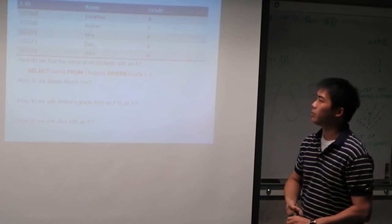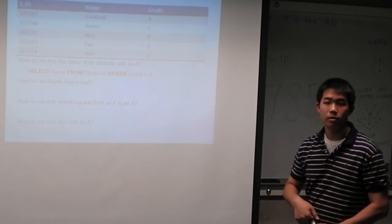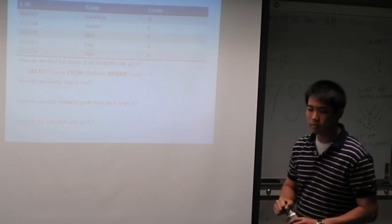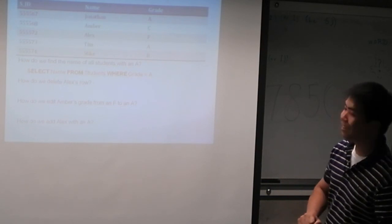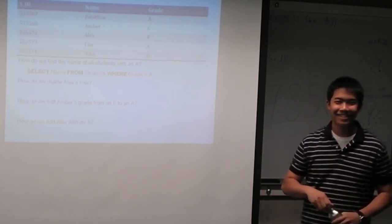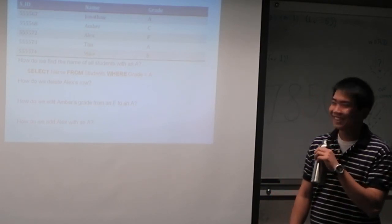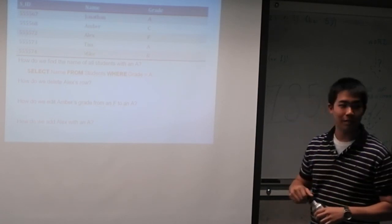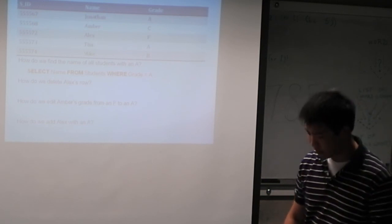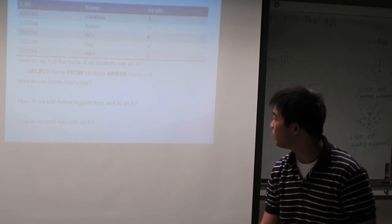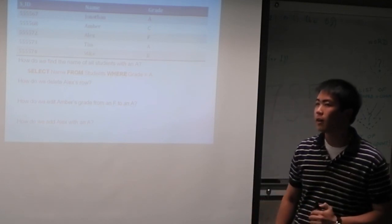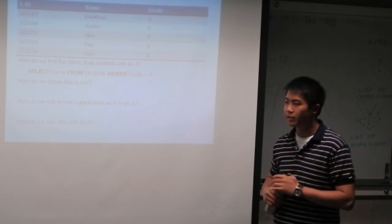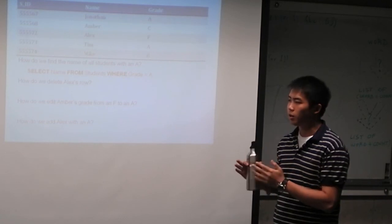So next question, how do we delete Alex's row? Is Alex still wrong? It's okay, Alex. So delete from students where name is Alex. Oh wait, star. No, because the star specifies which column names you want to show. That's a specification using the read to specify which column names you want to show.